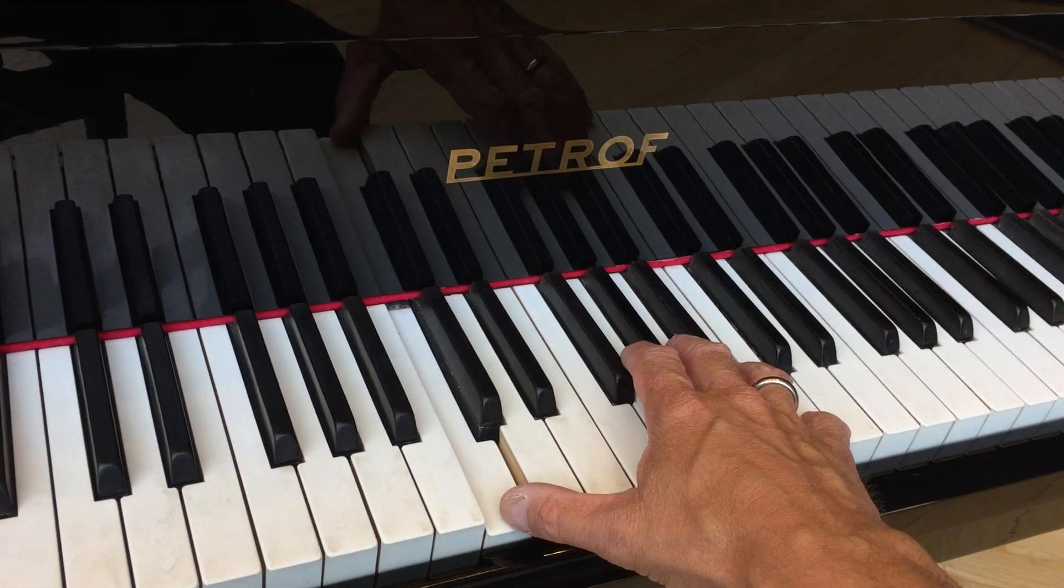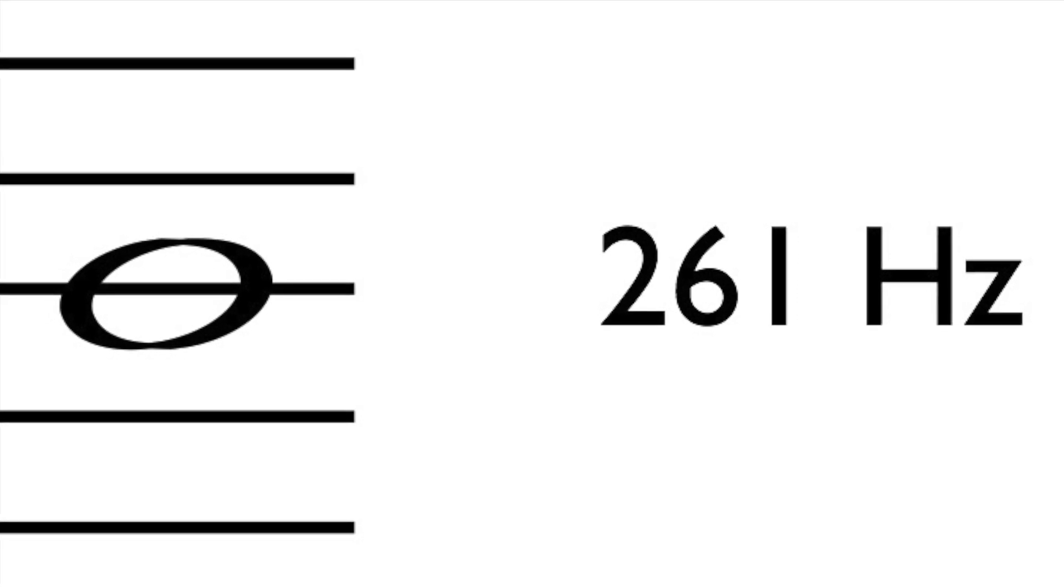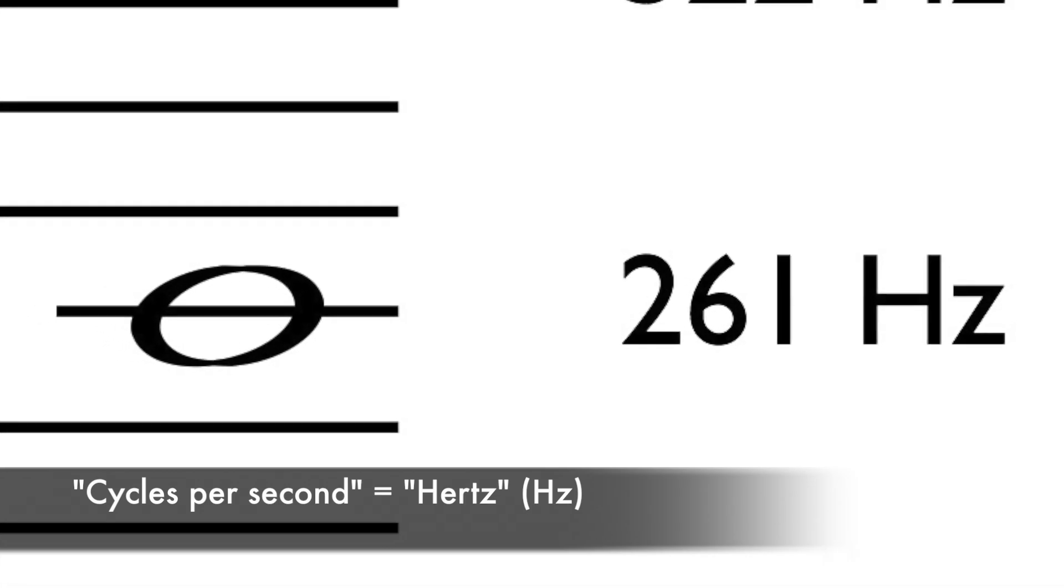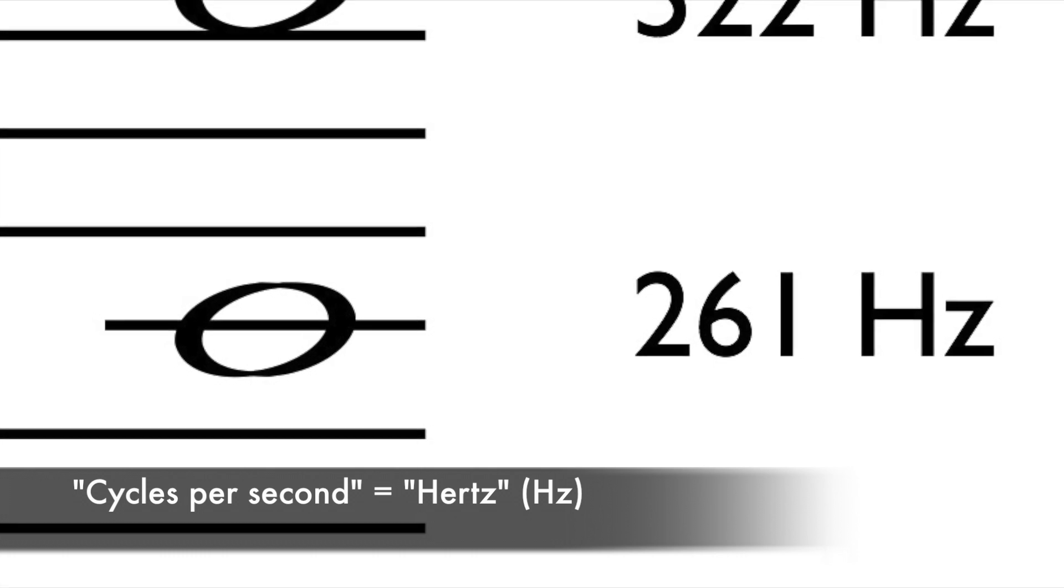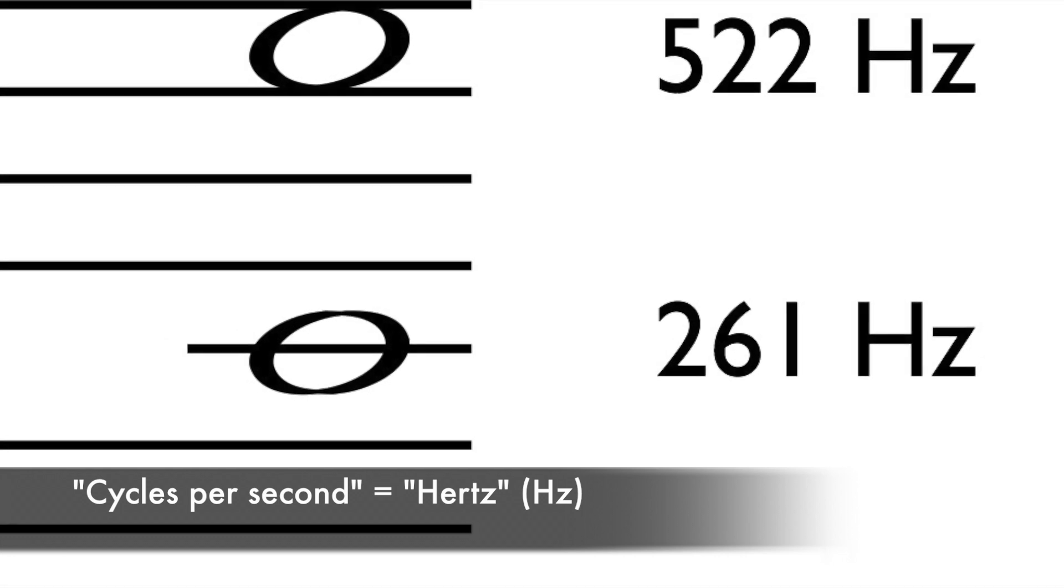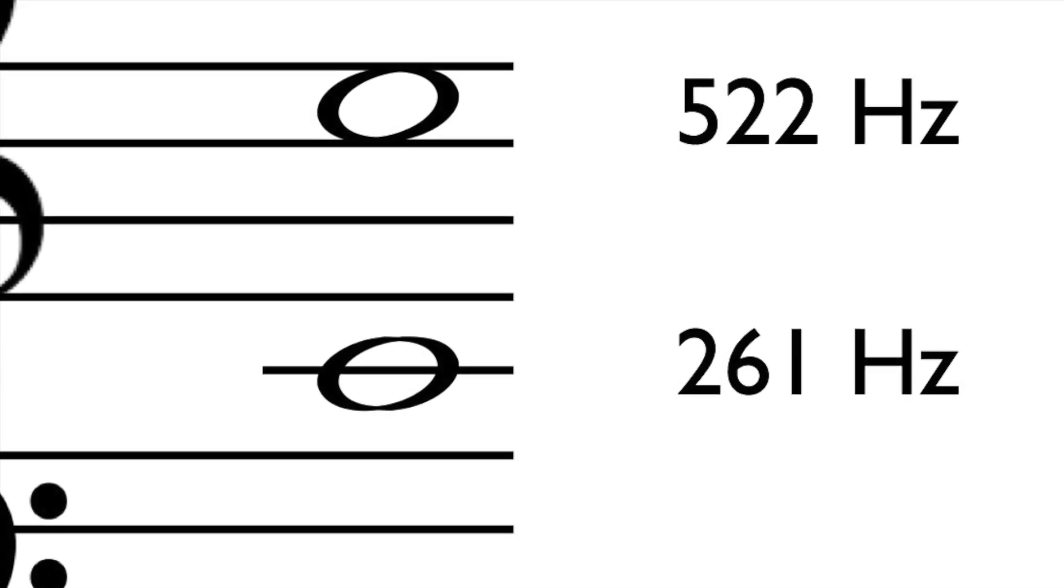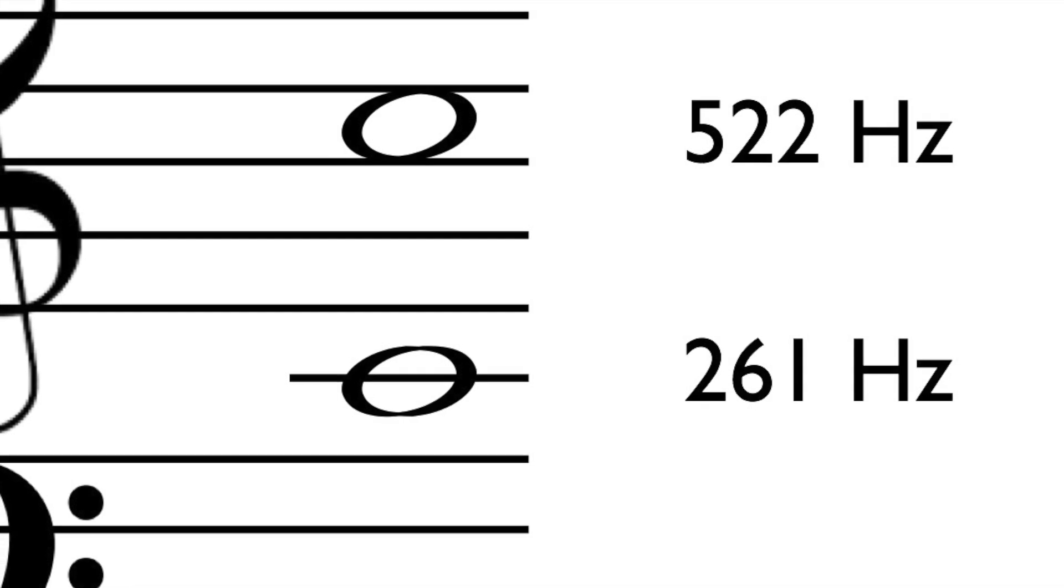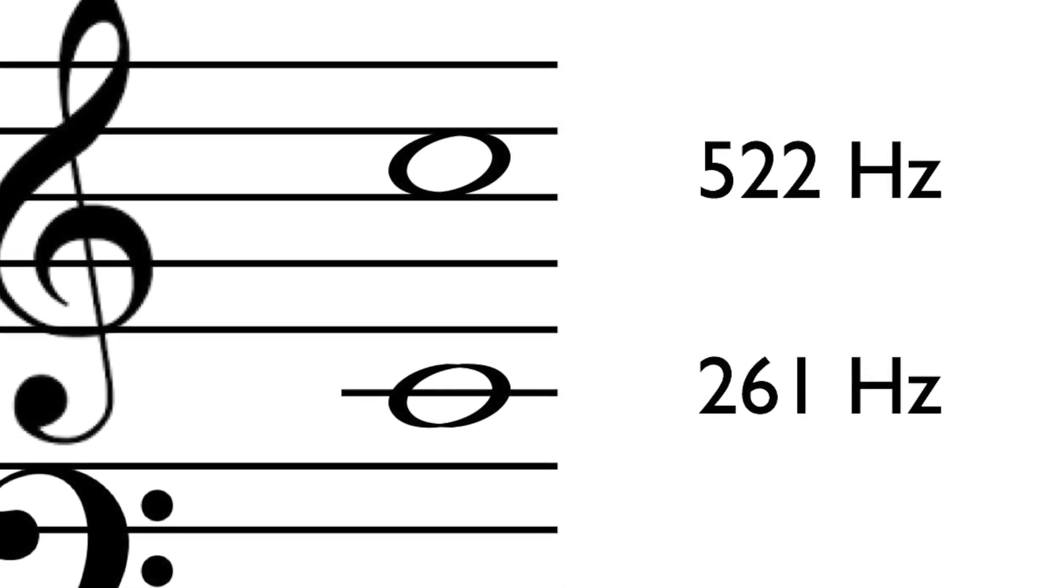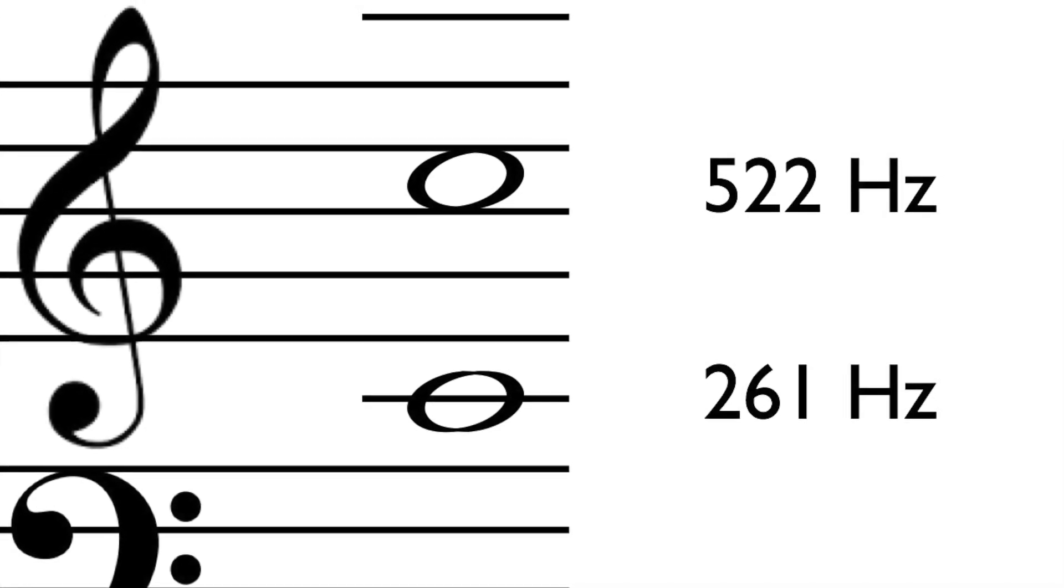If you play one octave above that, so on a piano that's 12 notes or one scale, 12 semitones above, then that's two times the frequency. So you go from 261 cycles per second, we also say 261 hertz, up to 522 cycles per second. That's 261 times two. Every time you go up one octave on the piano, guitar, or singing one octave higher, the frequency is multiplied by two. So every time you go up by one octave, you double the frequency.